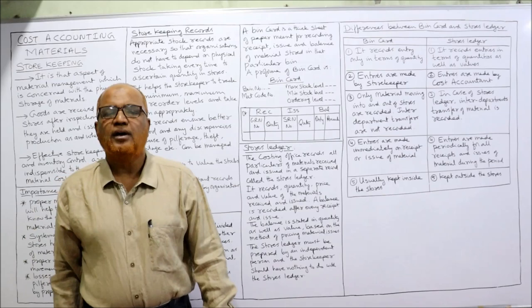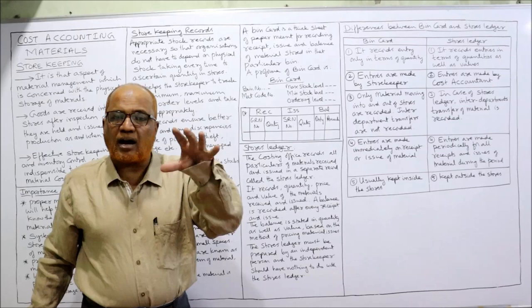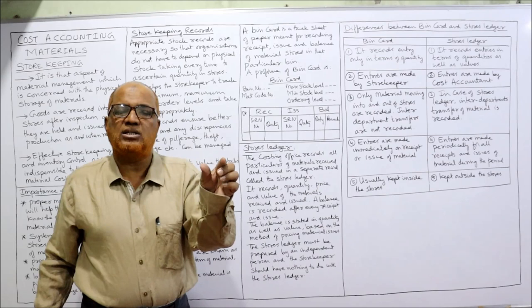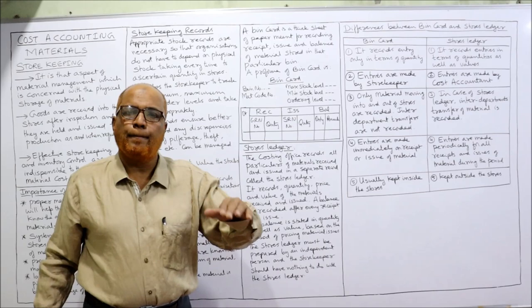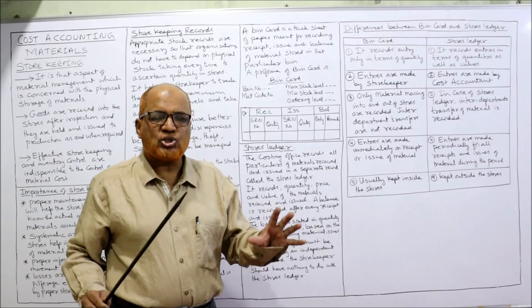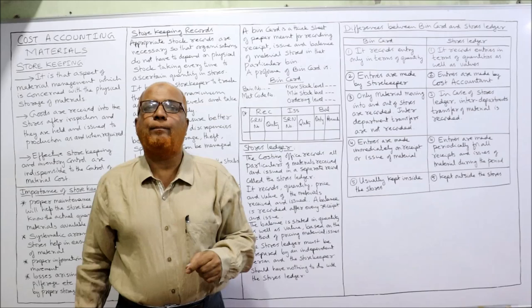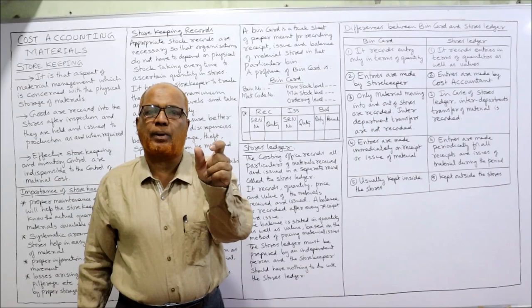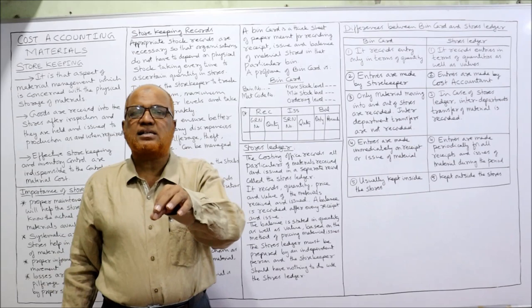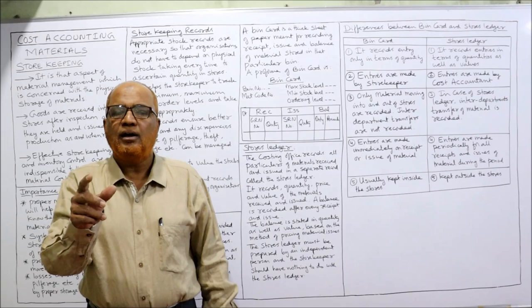The second record is the stores ledger. The cost accounting department records all particulars of material received and issued in a separate record called the stores ledger. The storekeeper records in the bin card, while the cost accountant keeps the stores ledger. In the stores ledger the cost accountant records all receipts, issues, and balance of material. It records quantity, price, and value of material received and issued, and a balance is recorded after every receipt and issue.